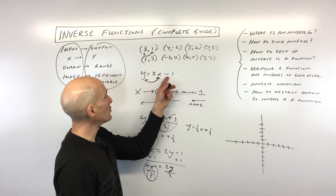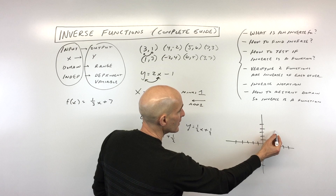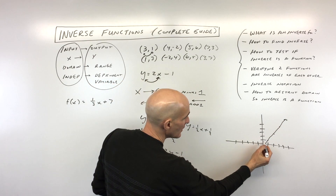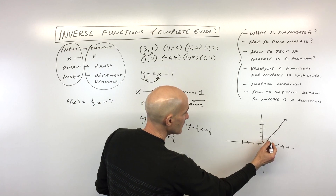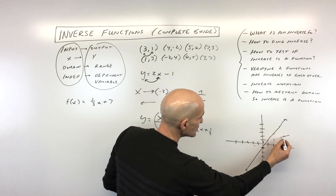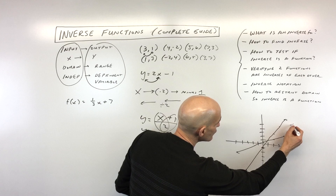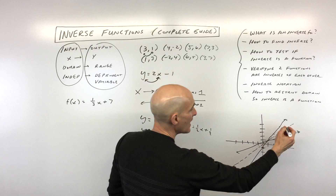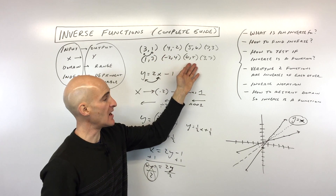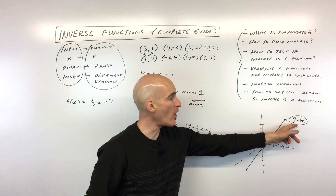Now let's talk about the graph. For y equals 2x minus 1, the y-intercept is negative one and the slope is two. For the inverse y equals one-half x plus one-half, the y-intercept is one-half and we go up one over two. What you'll notice is that these two graphs are reflections over the dashed line y equals x. Whenever you reflect over the line y equals x, it's the same as interchanging the x and y coordinates.